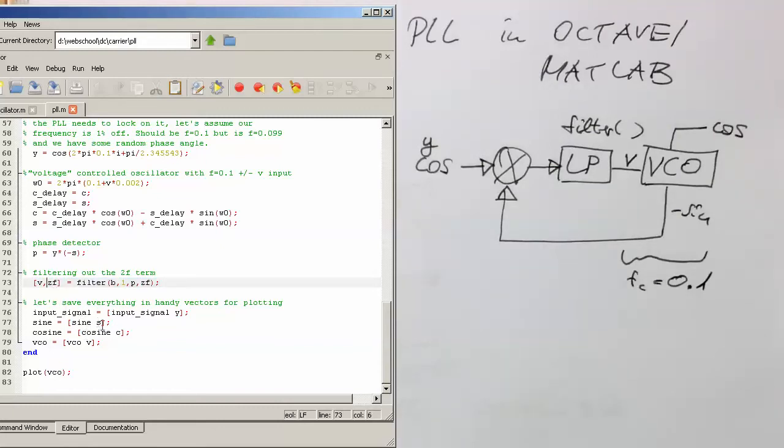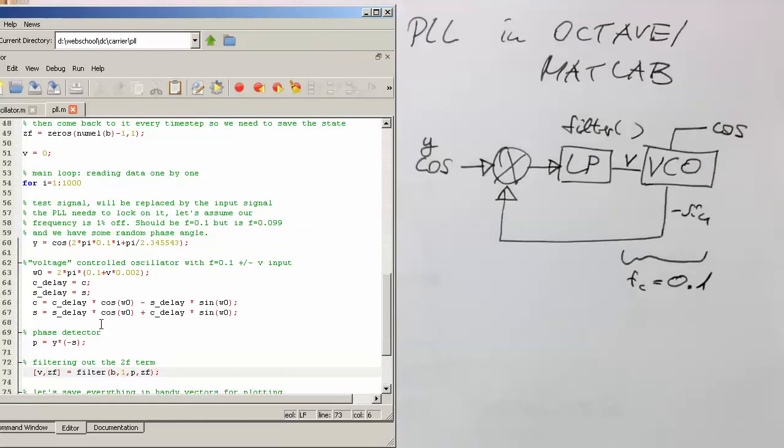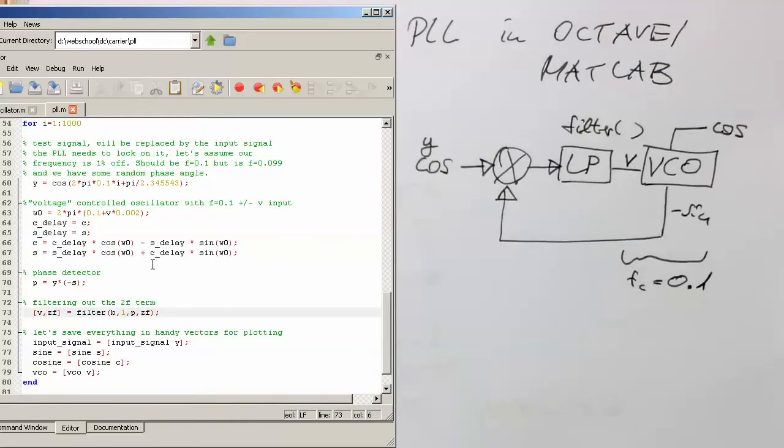So then we're just saving this here into convenient variables. Otherwise, the code is quite self-explanatory. So our input signal Y in this case here, this one, which is coming in here, is just a signal at the carrier frequency 0.1 plus a random phase here I've added. So the PLL needs to lock on this phase here. So let's see if this works.